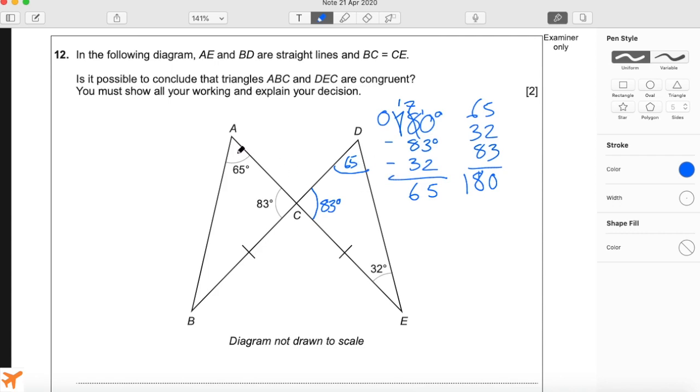We have 65 degrees here and 83, so we know this missing angle must be 32. Same logic: 180 minus 65 minus 83 is 32. We can quickly look across and see that these two are the same, so this must also be 32.